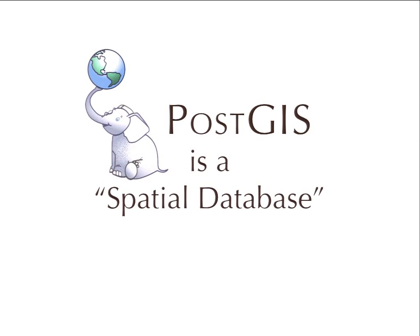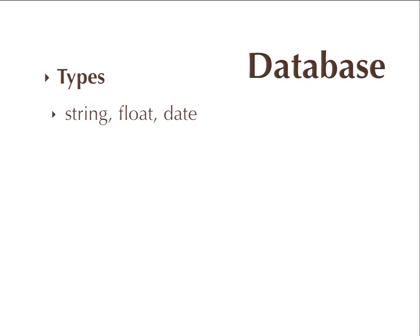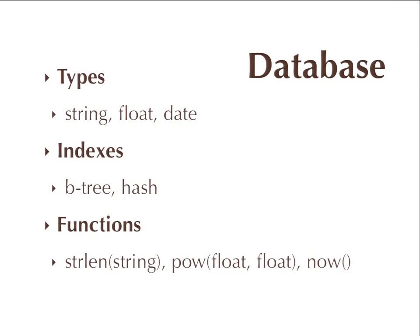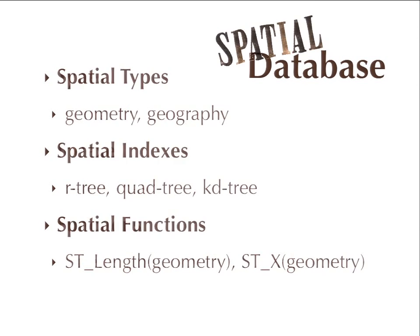PostGIS is a spatial database — a term of art. A database has types, indexes to make it faster to get data out of those types, and functions that let you manipulate those types. A spatial database is all that, except with 'spatial' in front of it. So it has spatial types — geometries and geographies that understand where things are — spatial indexes to handle range-based objects that fall across multiple dimensions, and functions that understand dimensionality and let you calculate interesting things.